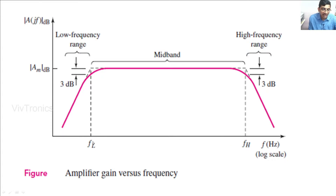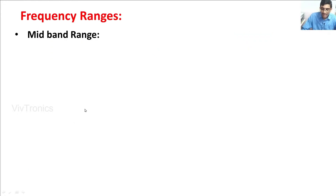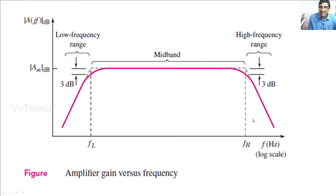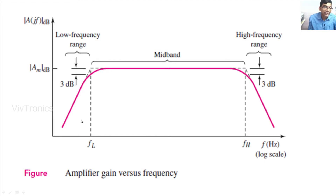These frequency ranges are divided by FL and FH, where FL is the lower cutoff frequency and FH is the higher cutoff frequency. Below FL the gain is rolling off, and above FH the gain is rolling off. In the low frequencies the gain is decreased by the coupling capacitors used in the amplifier circuit, and in the high frequencies the gain is decreased by transistor or stray capacitances. The maximum gain AM in decibels, at minus 3 dB from the maximum, gives the half-power frequencies FL and FH.